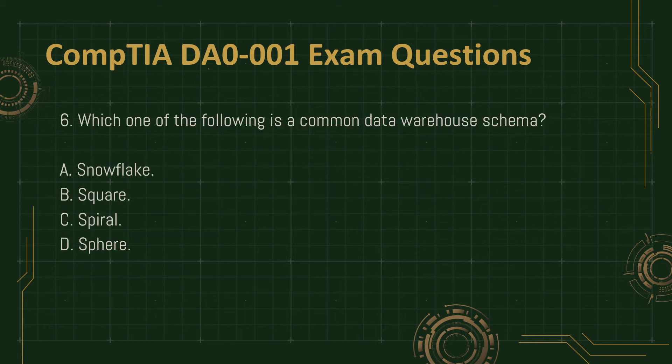Question 6: Which one of the following is a common data warehouse schema? A. Snowflake. B. Square. C. Spiral. D. Sphere.